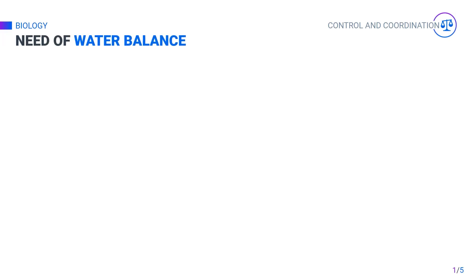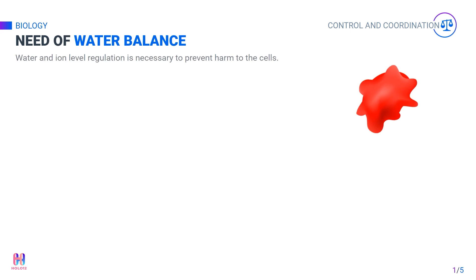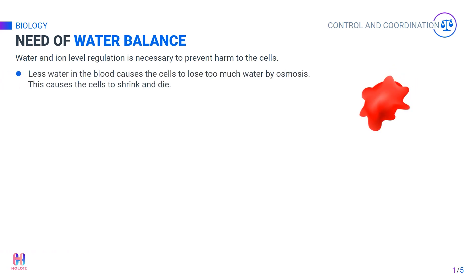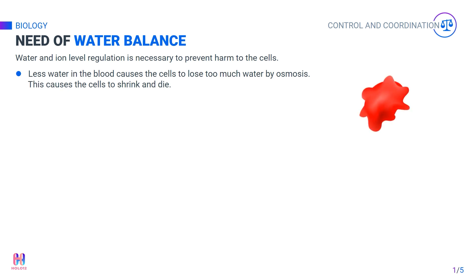The regulation of water in the body is necessary to ensure that the cells are not harmed. If the water level is low in the blood, the cells lose too much water by osmosis, leading to the cells shrinking and eventually dying. The exact opposite occurs when the water level is high — the cells take up water, swell up, burst, and die.